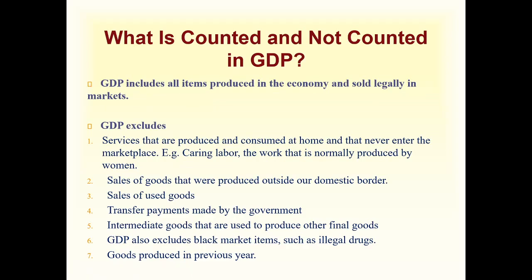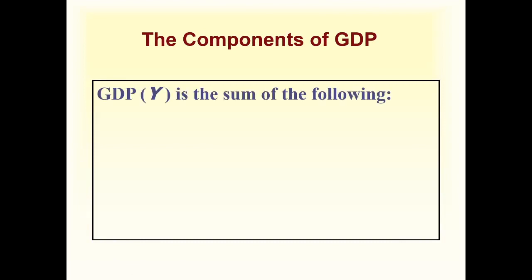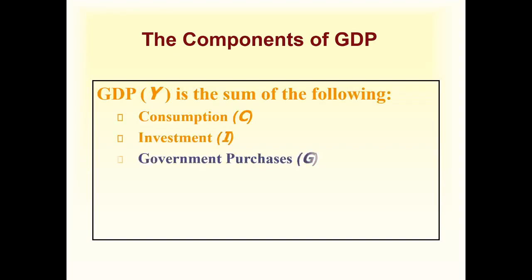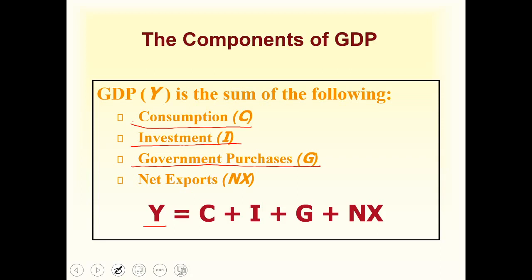Now we will move on to the components of GDP. GDP is the sum of the following terms — this is the GDP equation: Y = C + I + G + NX, where C is consumption, I is investment, G is government purchases, and NX is net exports. So GDP equals consumption plus investment plus government purchases plus net exports.